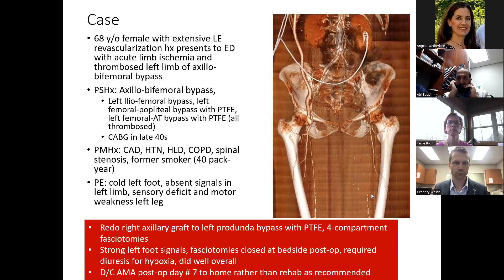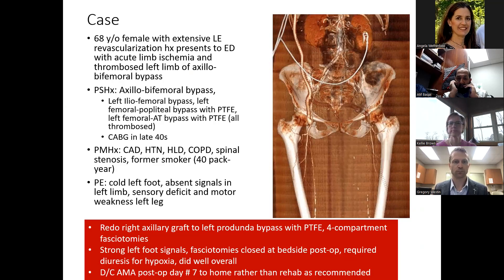Here's a case representing the worst-case scenario of what can happen with surgical site infections. A 68-year-old female came to our emergency department with acute left lower extremity limb ischemia and a thrombosed left limb of an axillobifemoral bypass. She had had extensive prior work: a left iliofemoral bypass that failed, a left fem-pop with PTFE that failed, and a left fem-ATL indwelling that had failed. She was a former smoker with a clearly threatened limb.